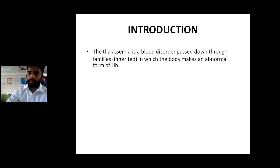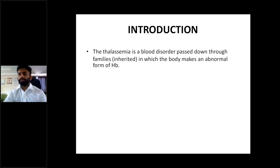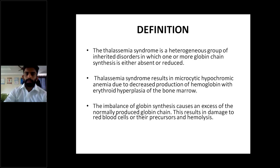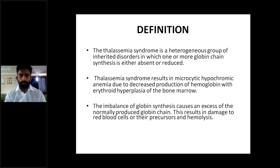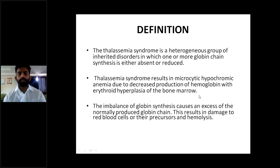Thalassemia is a blood disorder passed down through families — inherited — in which the body makes an abnormal form of hemoglobin. The definition: thalassemia syndrome is a heterogeneous group of inherited disorders in which one or more globin chain syntheses is either absent or reduced. This leads to microcytic hypochromic anemia due to decreased production of hemoglobin with erythroid hyperplasia of the bone marrow.